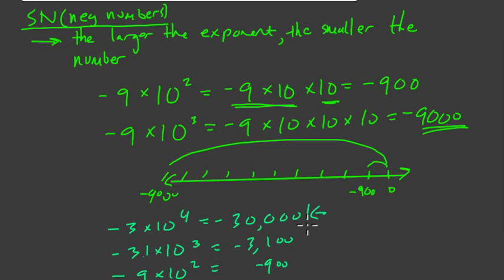We said already negative 9 times 10 squared is negative 900. So the number that's the most negative is the smallest, which we established, negative 3 times 10 to the 4th. Then negative 3,100, and finally negative 900, it's the most positive number, it's the largest.